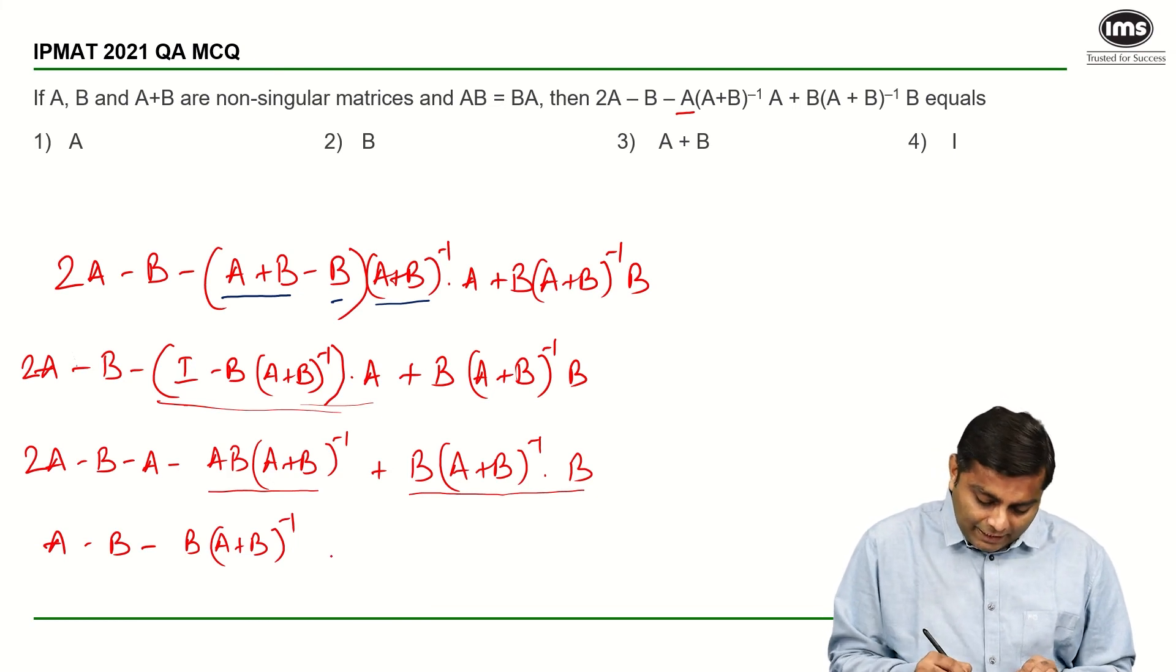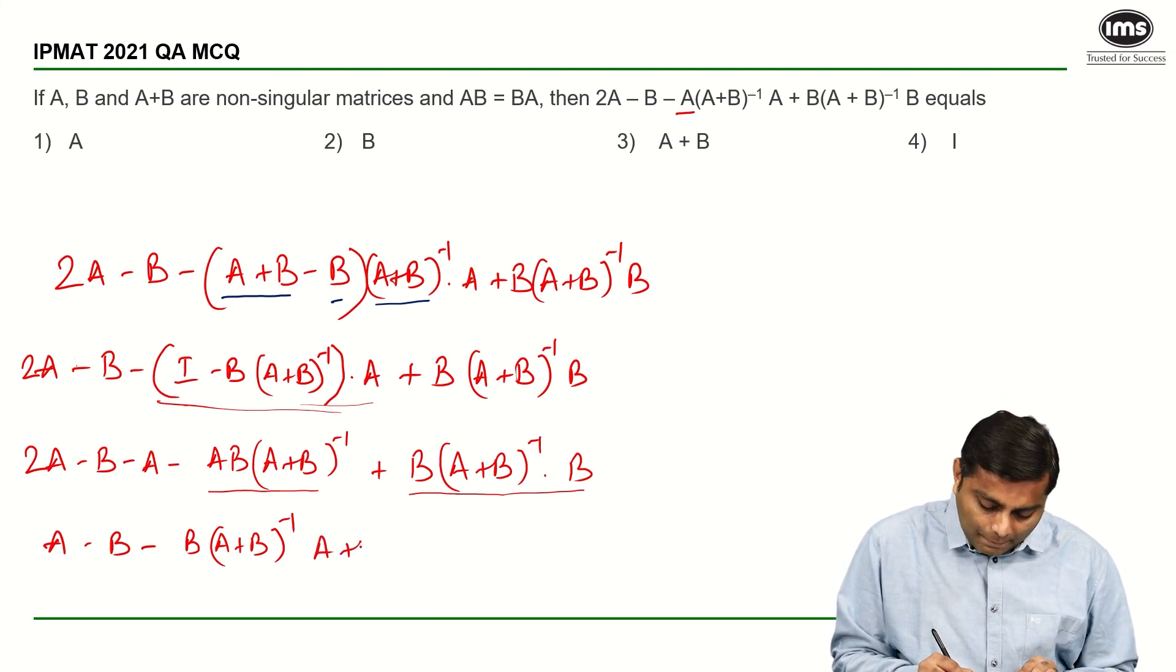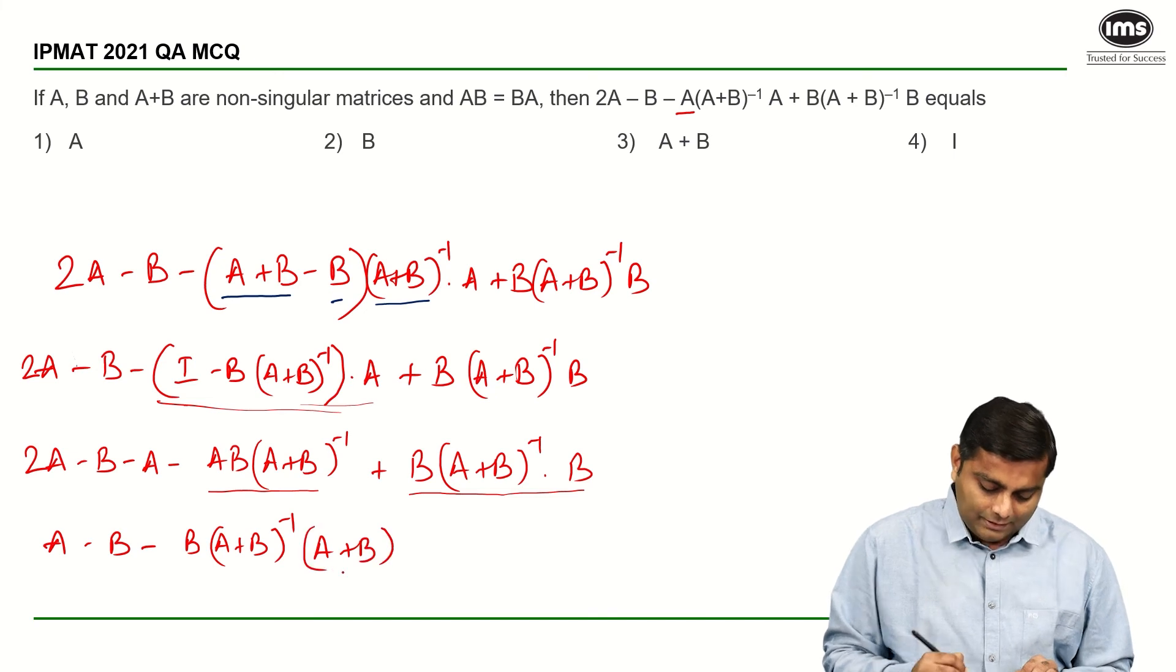So, B into A plus B inverse if I take out, what am I left with? I am left with A plus B into the bracket, correct.